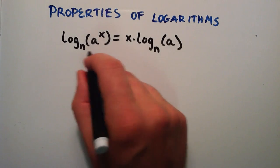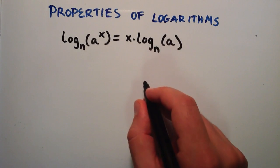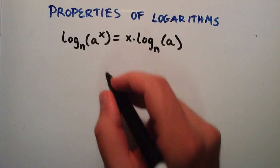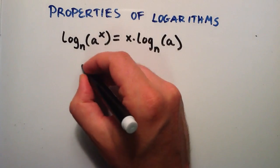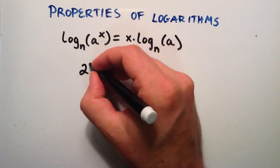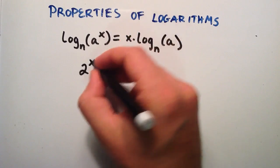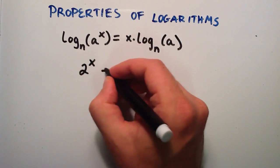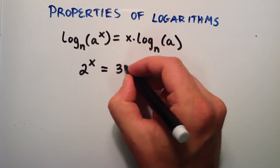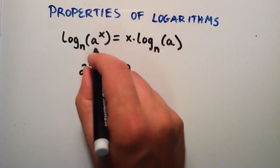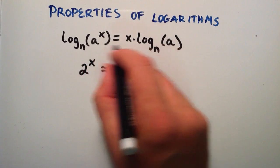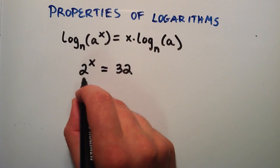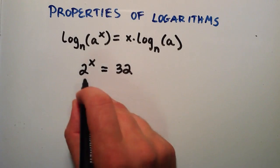This property is really useful when we're trying to solve a problem where our variable is in the exponent. For example, if we have a variable in the exponent like this — our variable x — 2 to the x is equal to 32. We can use this property to solve and find out what x has to be in order for this statement to be true.